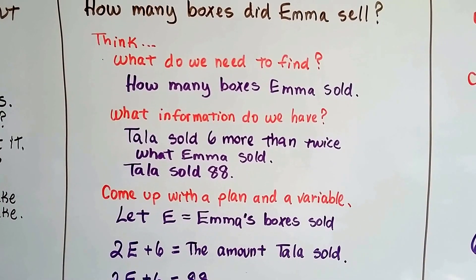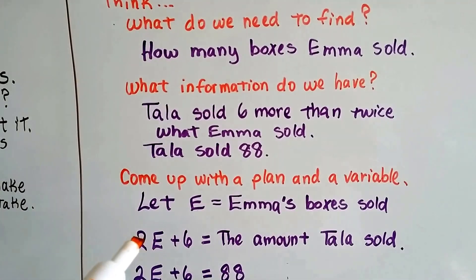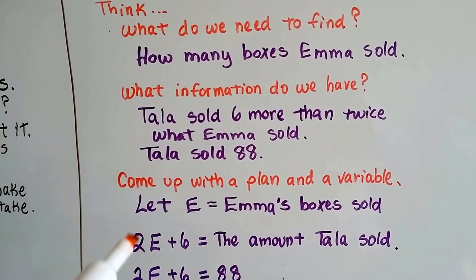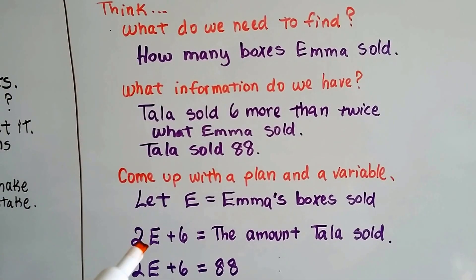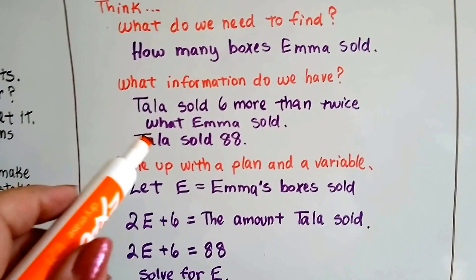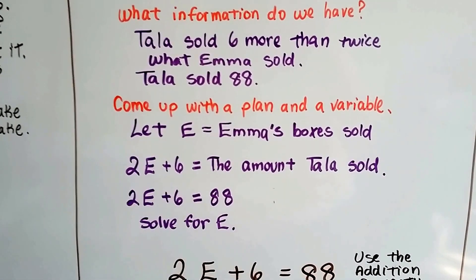Now we're going to come up with a plan and a variable. We're going to let E equal Emma's boxes sold. So we know that if we have two times Emma, twice what Emma sold - if we have two times Emma and six more, plus six, that's going to be the amount that Tala sold. And it already told us that Tala sold 88. So now our equation is 2E plus 6 equals 88.